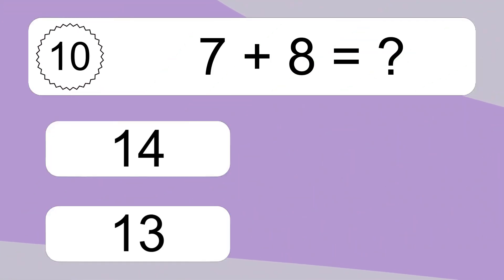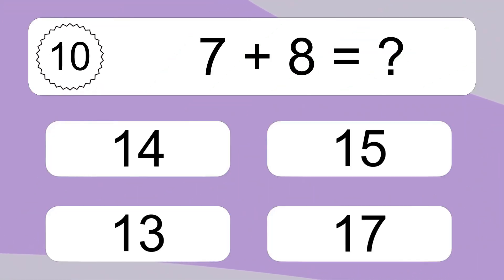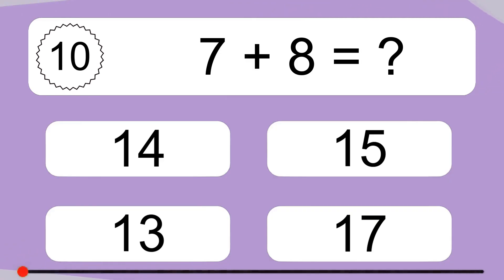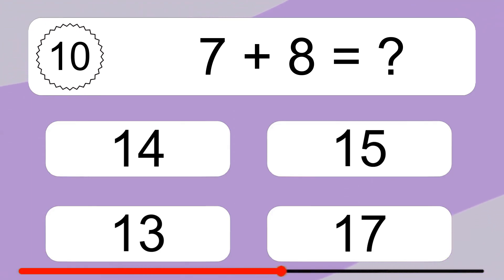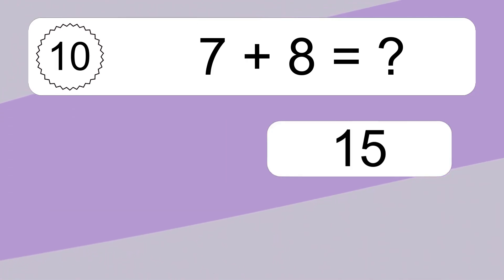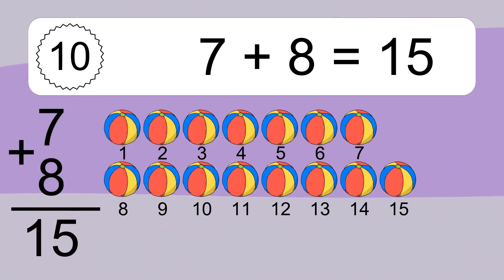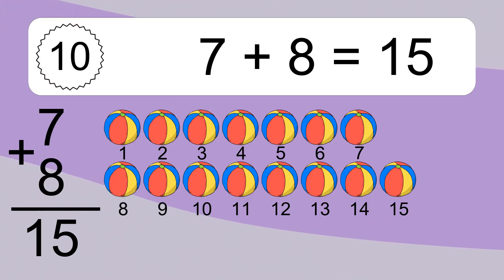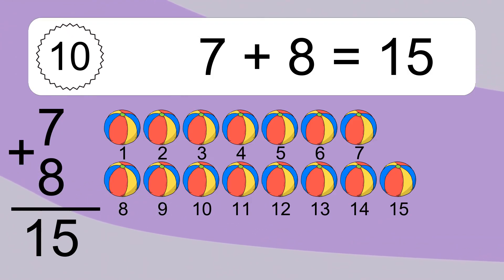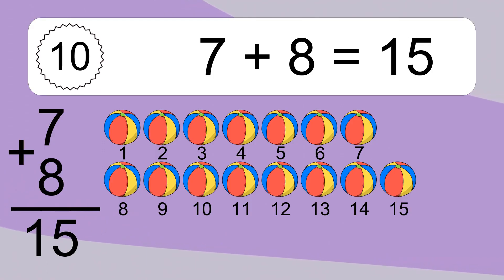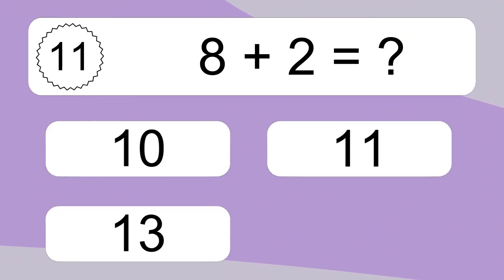7 plus 8 equals what? 1, 2, 3, 4, 5, 6, 7, 8, 9, 10, 11, 12, 13, 14, 15.